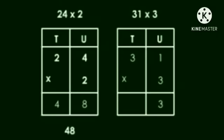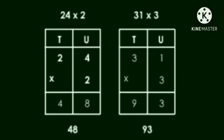3 into 1 is equal to 3. Write 3 in the units place. Next, 3 into 3 is equal to 9. Write 9 in the 10s place. So, the answer is 93.